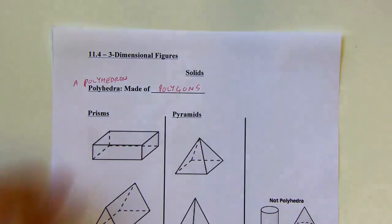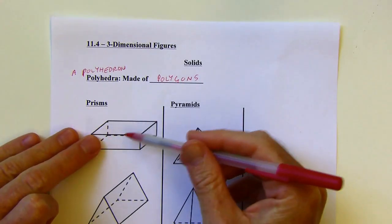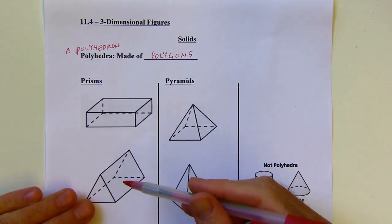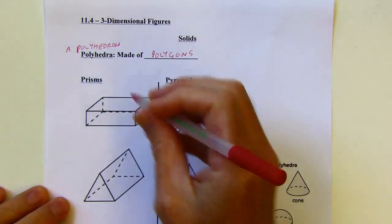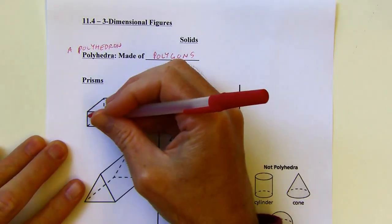So we've got prisms, which they can look sort of like boxes, but a prism might also look sort of like a tent. So a figure is repeated throughout it is one way you can think about it.